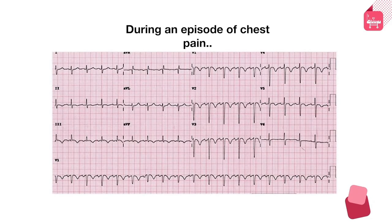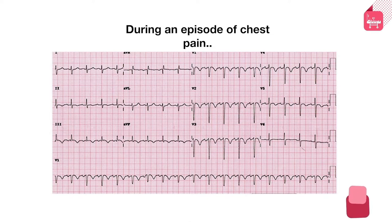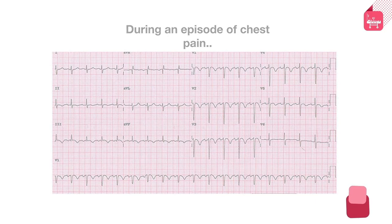This is an example of an ECG taken from a person during an episode of chest pain. If you find T wave inversions in the anterior leads in a person who comes to you with chest discomfort, you should be concerned that there is ongoing ischemia.